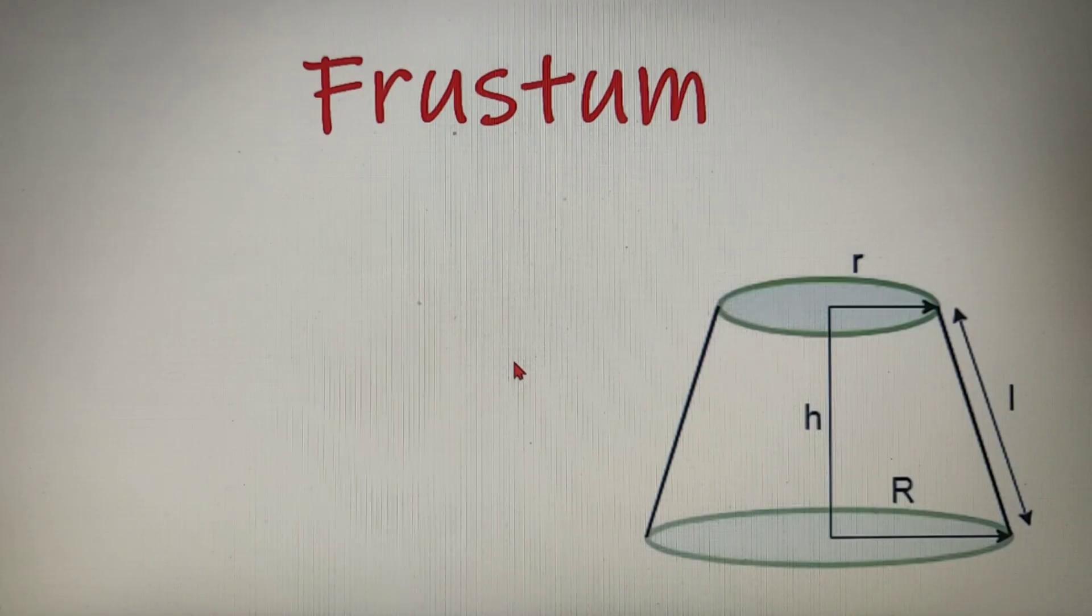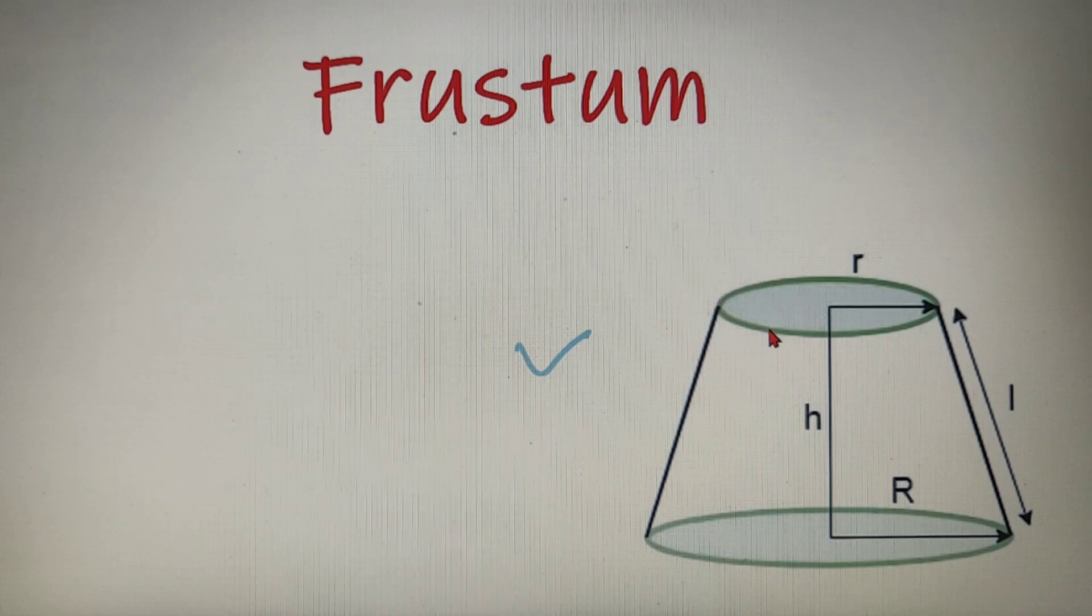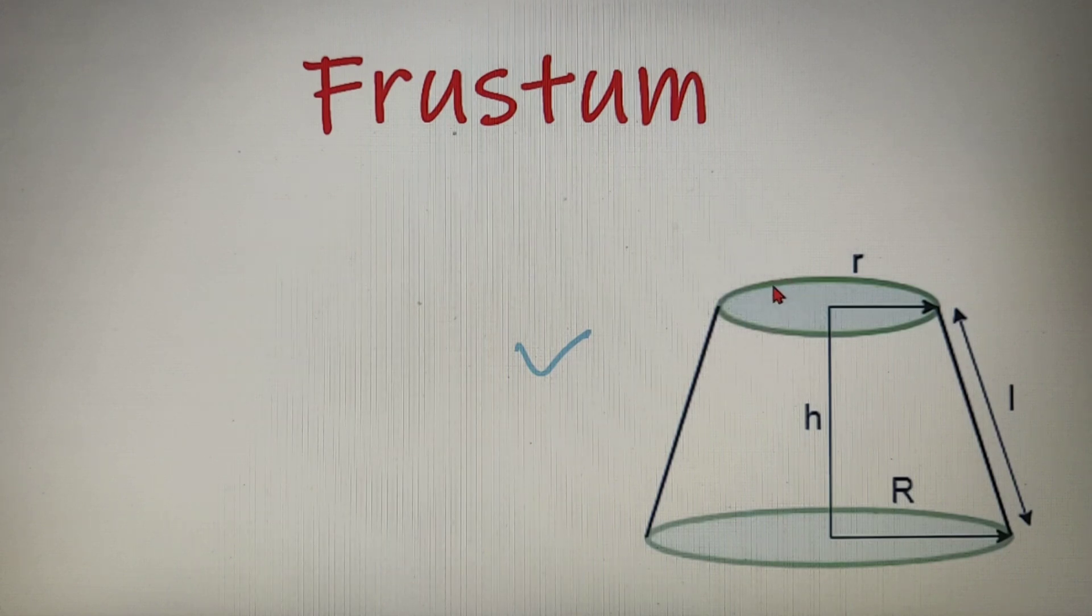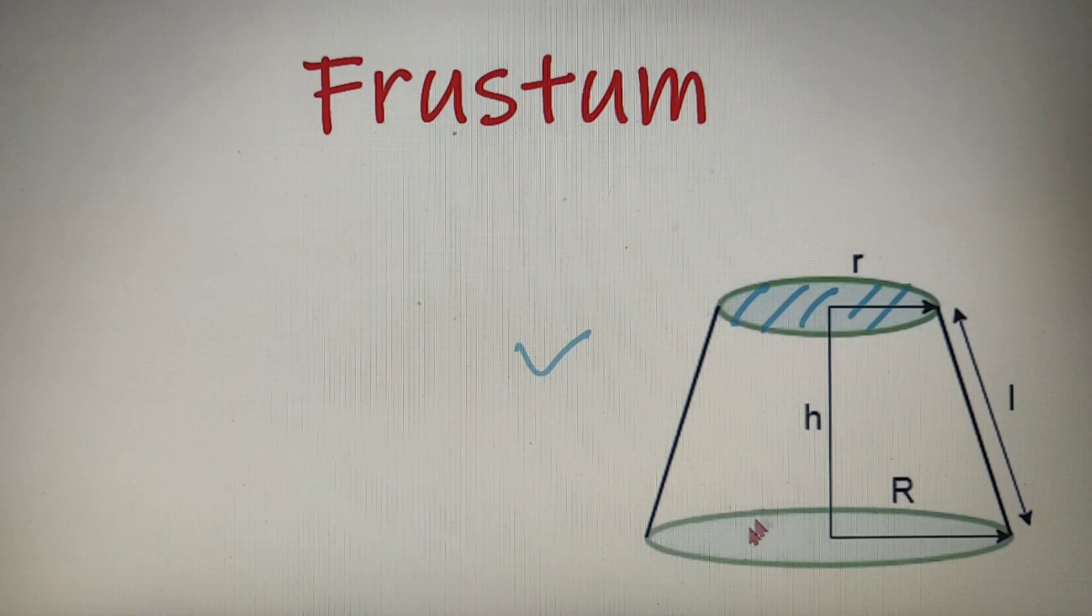Now the figure that you can see over here is called as the frustum of a right circular cone. Now there are some important terms that you must know about a frustum and let's learn them one by one. Now the frustum has two circular areas, one is at the top and one is at the bottom.